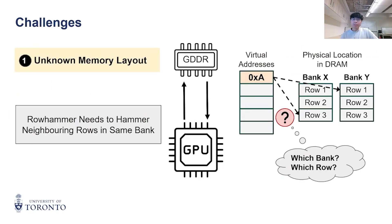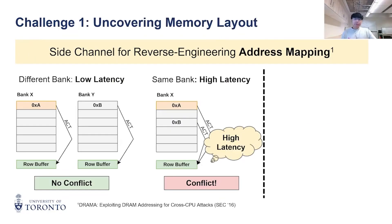Let's look at the first challenge. We need to hammer neighboring rows in the same bank, but given a virtual address, how do we know which bank and row it belongs to? To retrieve the mapping, we leverage a timing side-channel from prior work DRAMA. Suppose we have two addresses, 0xA and 0xB. If they are in different banks, accessing them at the same time will have low latency, as each bank has its own buffer.